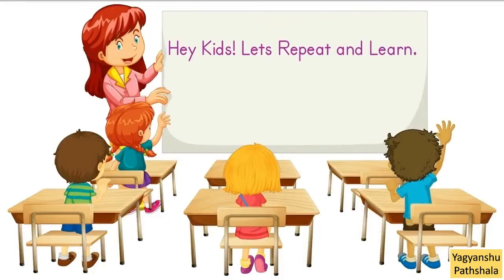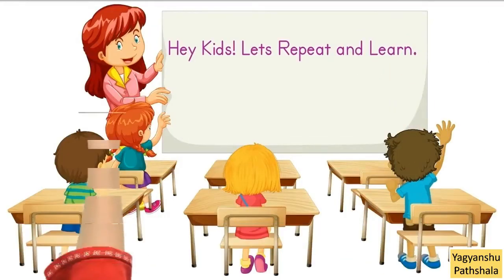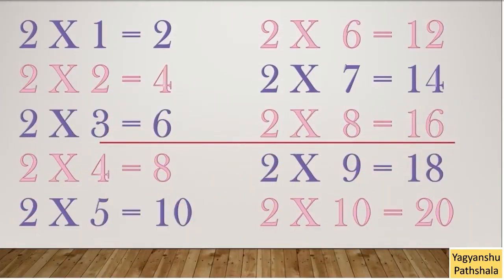Hey kids, let's repeat and learn. 2 into 1 is 2. 2 into 2 is 4. 2 into 3 is 6. 2 into 4 is 8. 2 into 5 is 10. 2 into 6 is 12. 2 into 7 is 14. 2 into 8 is 16. 2 into 9 is 18. 2 into 10 is 20.